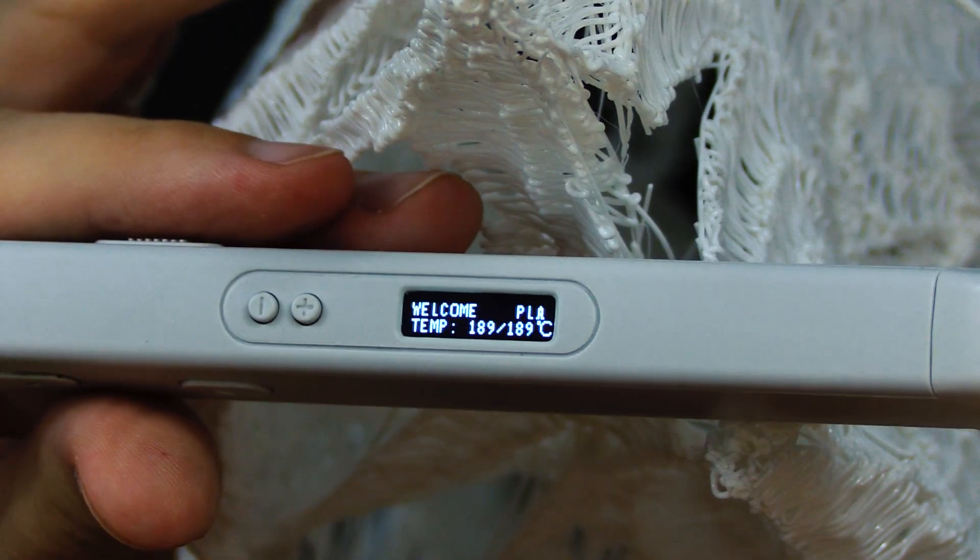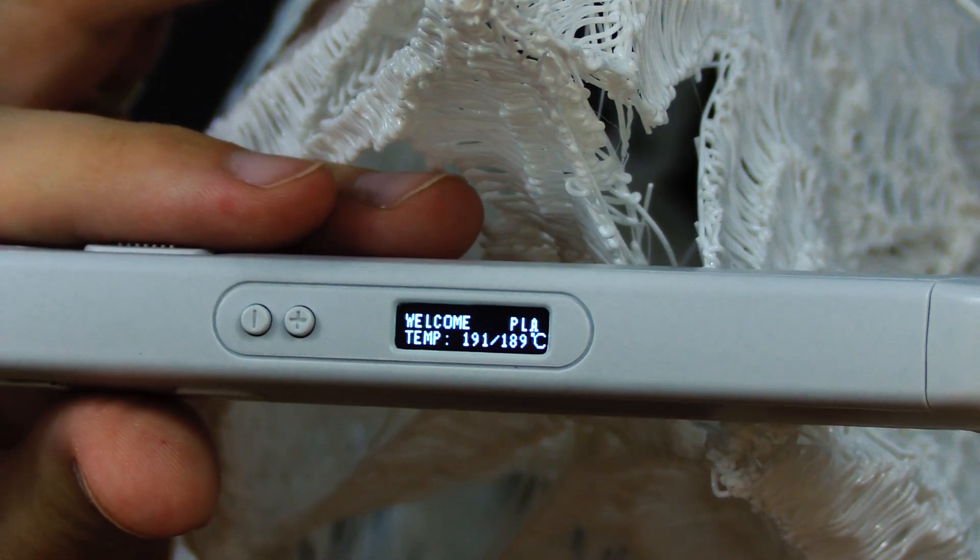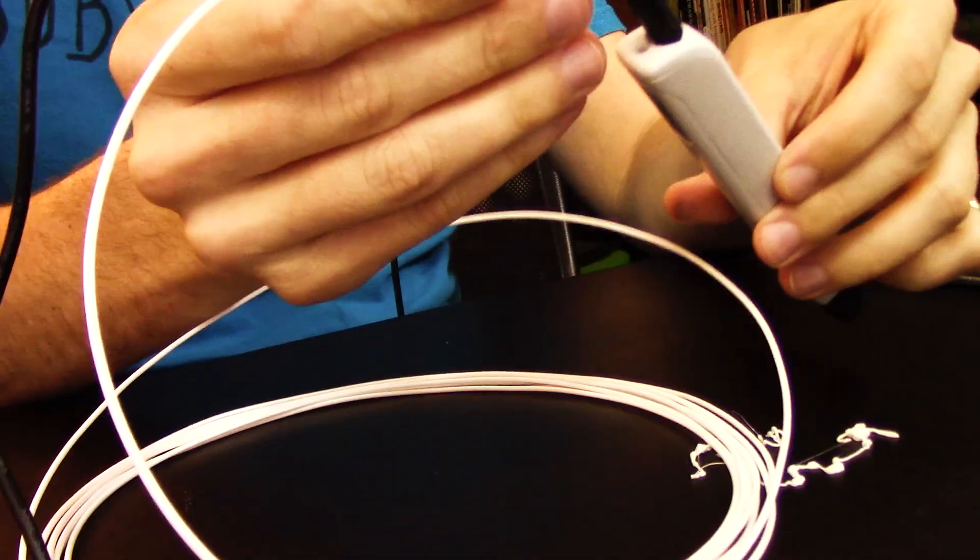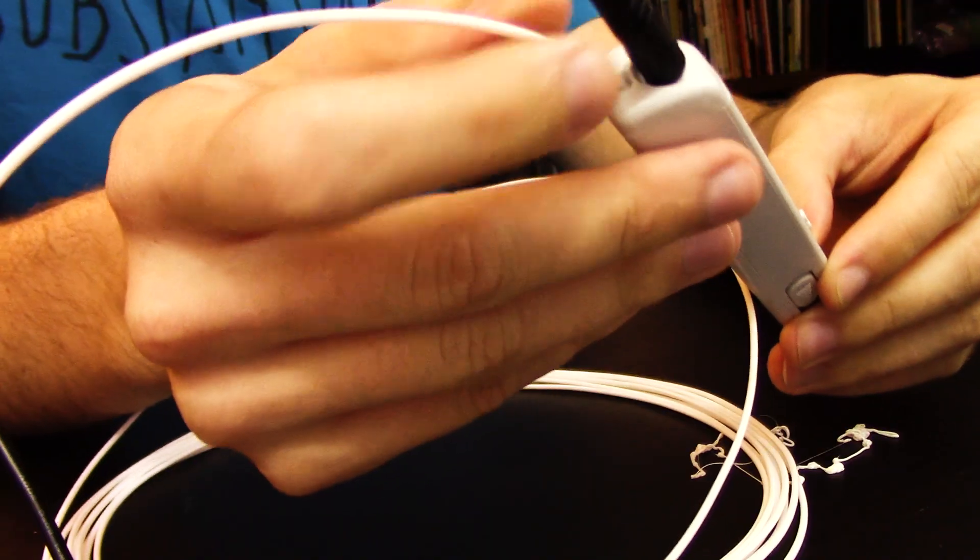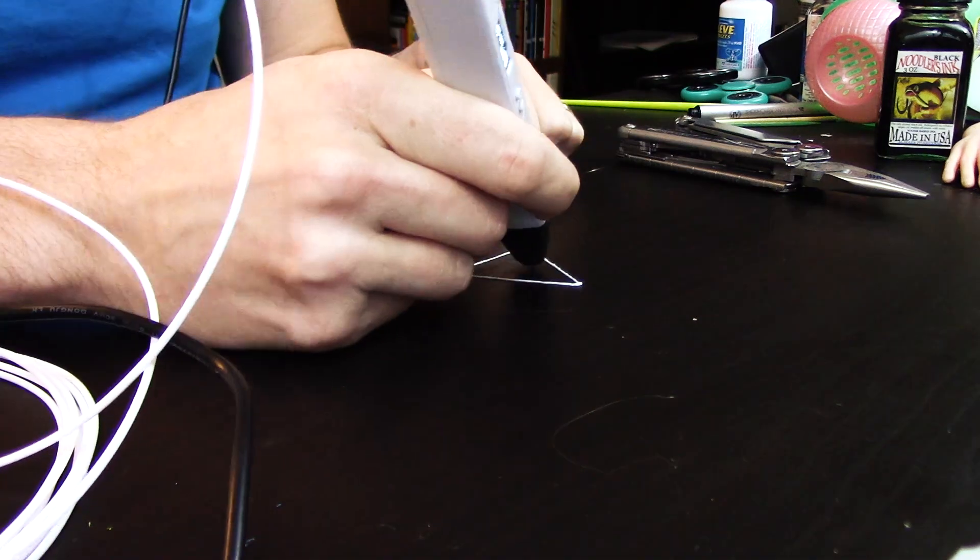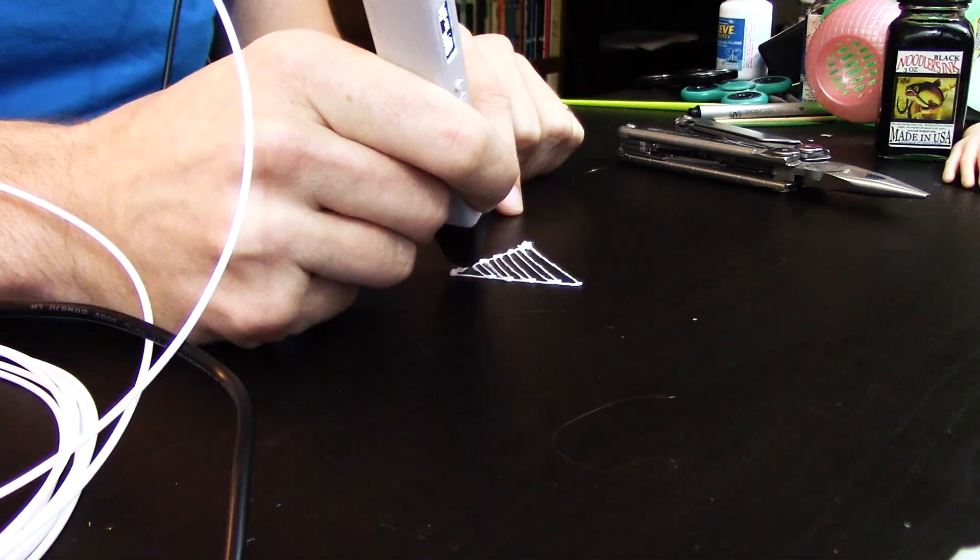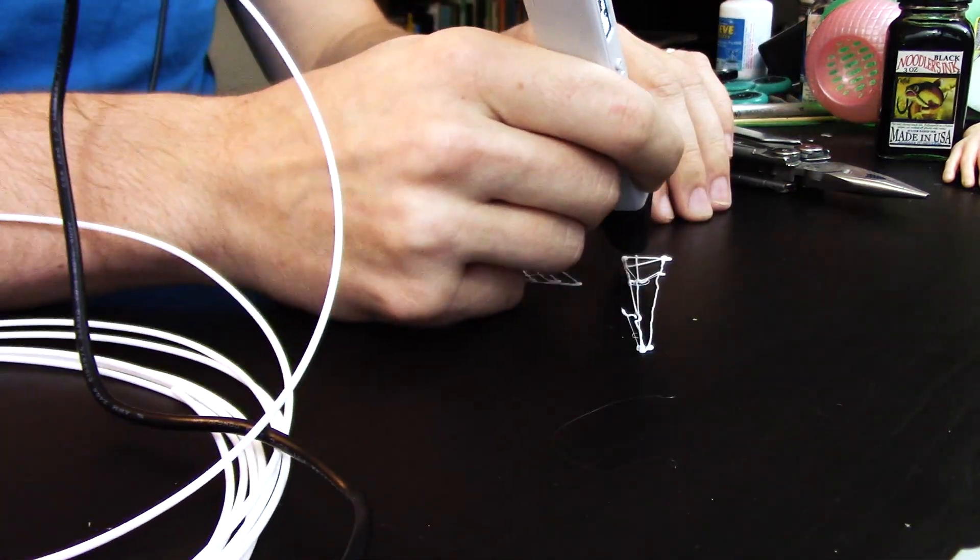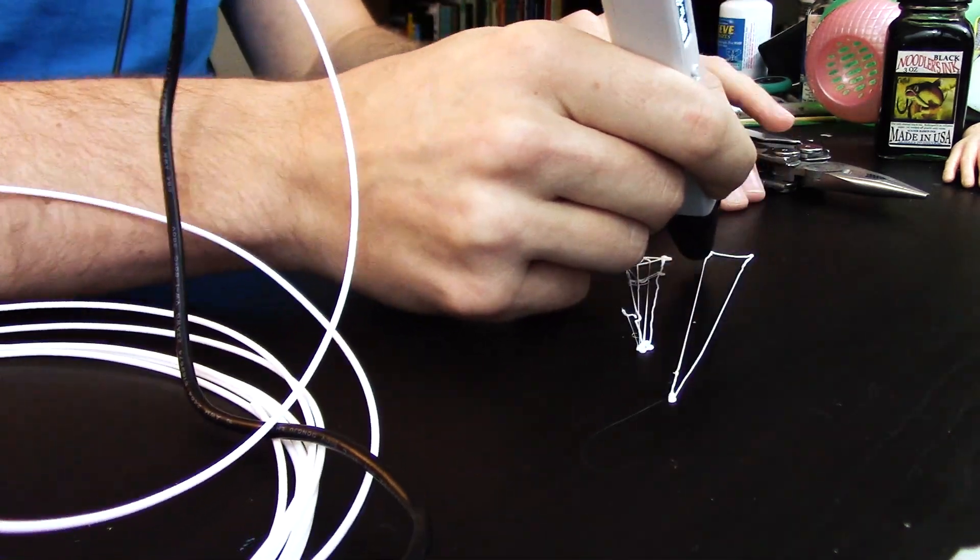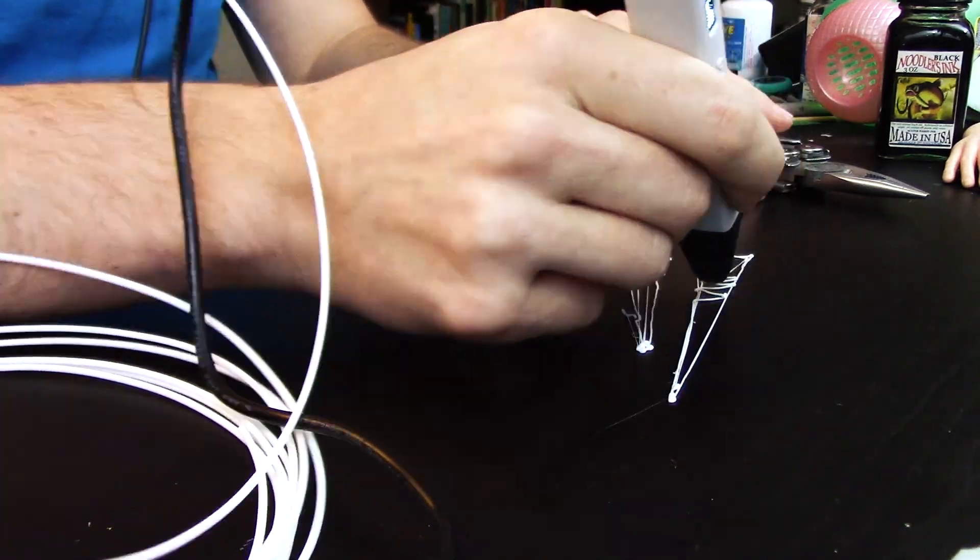3D pens use the same kind of plastic and filament as regular 3D printers. I guess it just has a bit more of a personal touch, and it's just a little bit more sloppy because you're holding the little plastic dispenser in your hand instead of it all being applied with computerized precision.